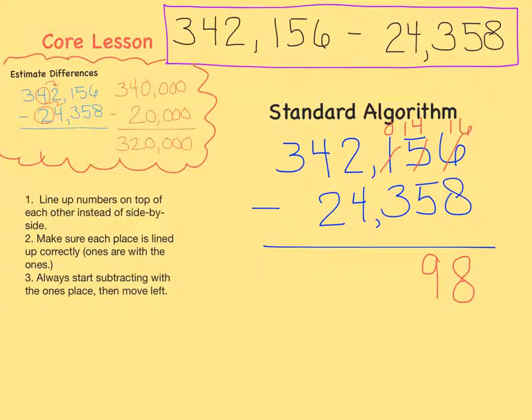Now let's subtract the hundreds place. We can't take 3 away from zero, so we need to regroup from the thousands. 10 minus 3 equals 7.